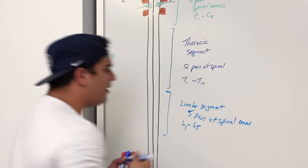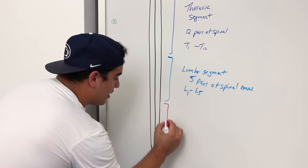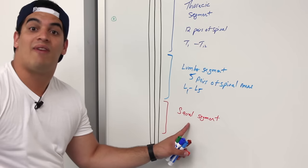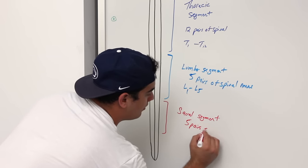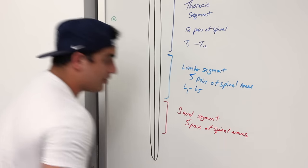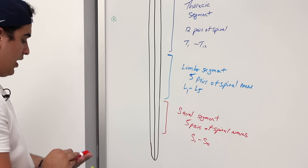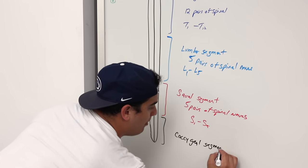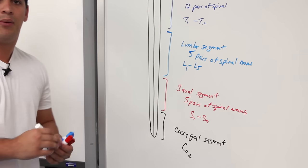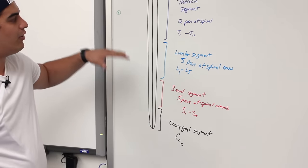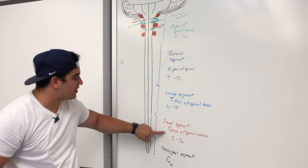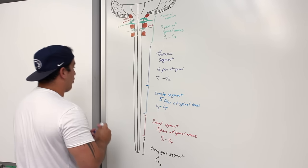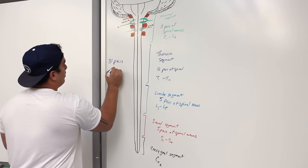The sacral segment consists of 5 pairs of spinal nerves, going from S1 to S5. The last one is the coccygeal segment, which is primarily the coccygeal 1 nerve. So totaling it up — 8 plus 12 plus 10 plus 1 — gives us 31 pairs of spinal nerves total.